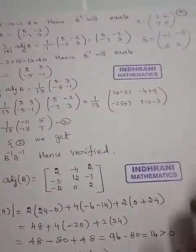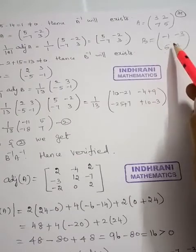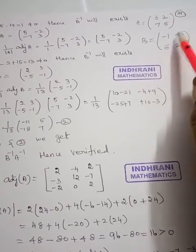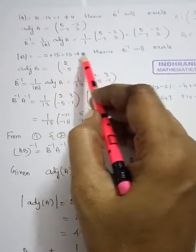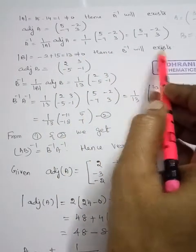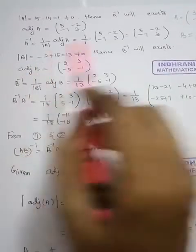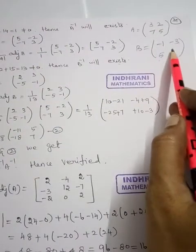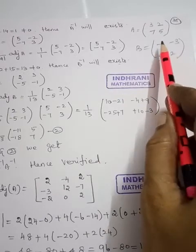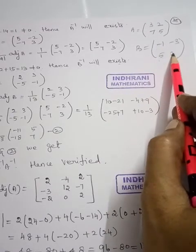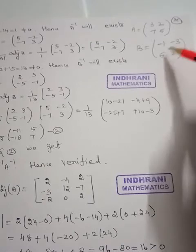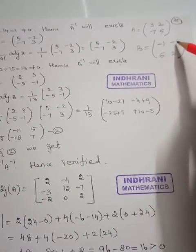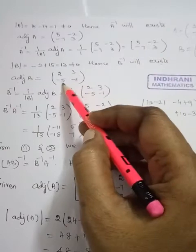Similarly, find determinant B. B matrix is the 2×2 matrix with elements minus 1, minus 3, 5, 2. Determinant of B: minus 1 into 2 is minus 2, minus 5 into minus 3 gives plus 15. So minus 2 plus 15 equals 13, which is not equal to 0. Hence B inverse will exist. Now find adjoint of B — interchange the leading diagonal elements to get 2 and minus 1, then change the sign of the other diagonal to get plus 3 and minus 5.